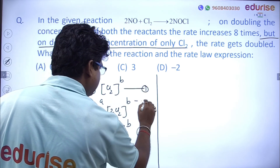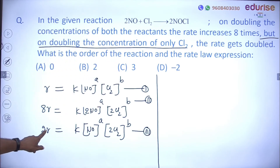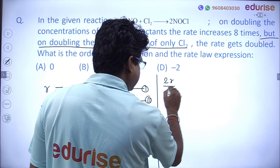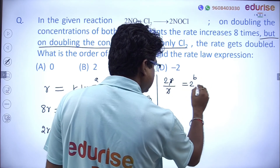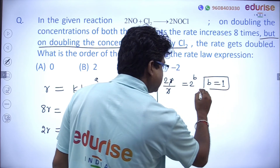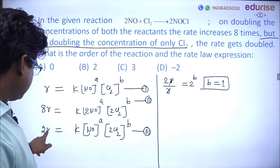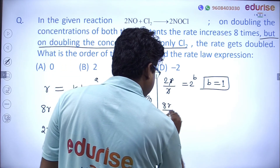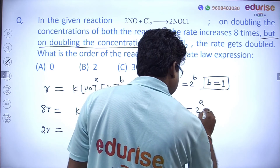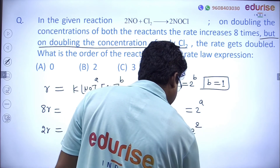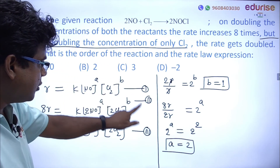From equations 2 and 3: dividing 2R/R, the NO and k terms cancel, giving 2^b = 2, so b = 1. Order with respect to Cl₂ is 1. Now dividing equation 3 by equation 2 (8R/2R): k cancels, giving 2^a = 4 = 2², so a = 2. Order with respect to NO is 2.